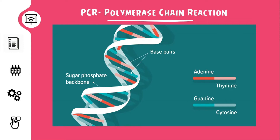So what exactly is a gene? A gene is a sequence of nucleotides in DNA or RNA that encodes the synthesis of a gene product, either RNA or protein. So genes are made up of DNA or RNA. It is the basic physical and functional unit of heredity.